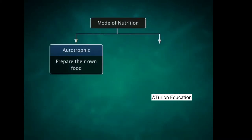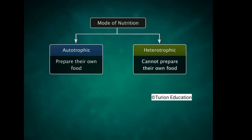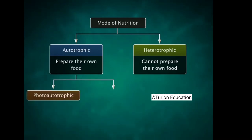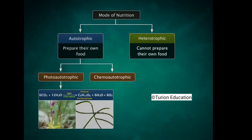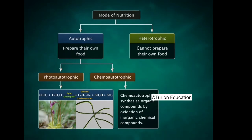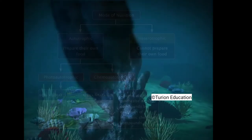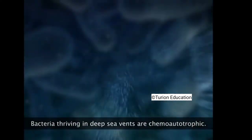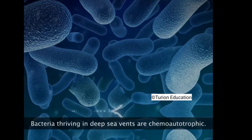Organisms are classified as autotrophic or heterotrophic depending on their mode of nutrition. Autotrophs that prepare their own food are either photoautotrophic or chemoautotrophic. Photoautotrophic organisms such as plants and some bacteria produce sugars from carbon dioxide and water in the presence of sunlight. Chemoautotrophs synthesize organic material by oxidation of inorganic chemical compounds — an example is bacteria that thrive in deep-sea hydrothermal vents.